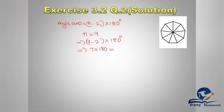So (9-2) = 7, and 7 × 180 degrees. Calculating: 8 × 756... the answer is 1260 degrees. So for a 9-sided polygon, all the interior angles add up to 1260 degrees.